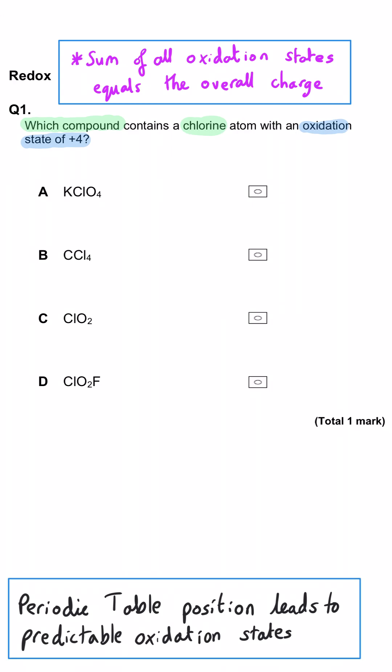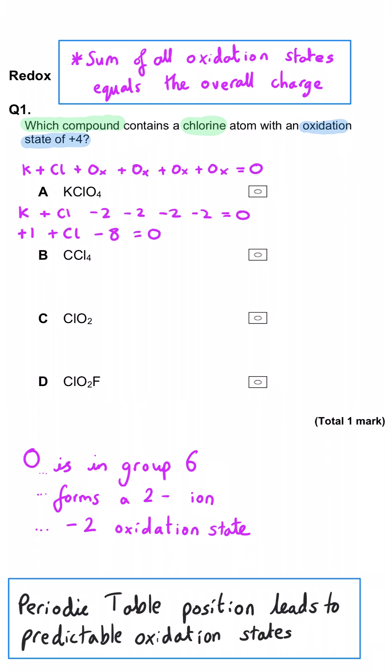So in A, oxygen is in group 6, so it will typically be minus 2. So 4 lots of minus 2, add potassium at plus 1 because it's in group 1, add chlorine equals 0. So the chlorine here must be plus 7.